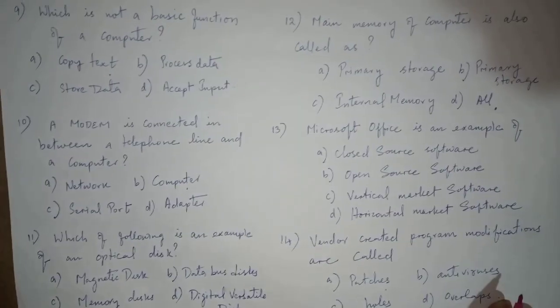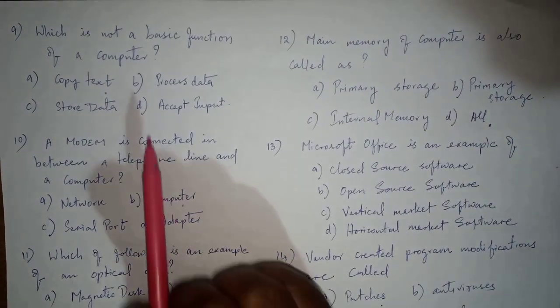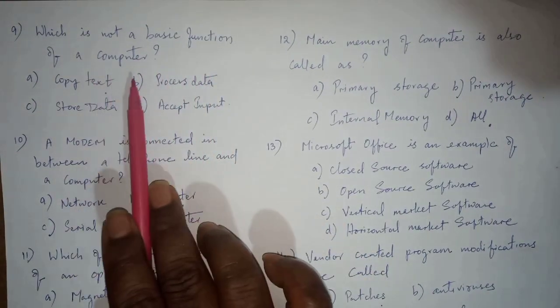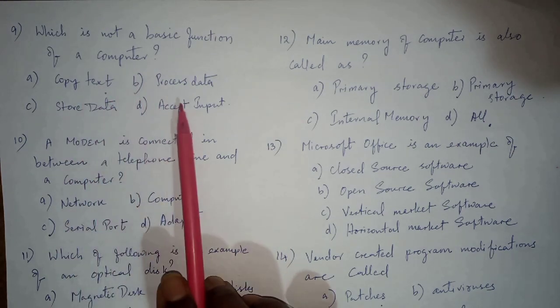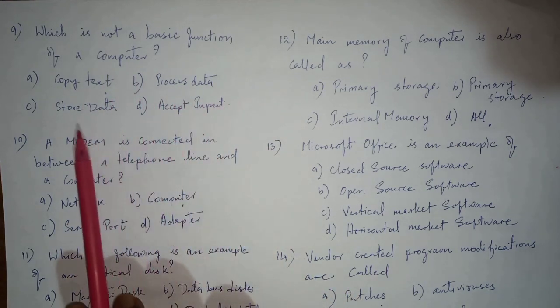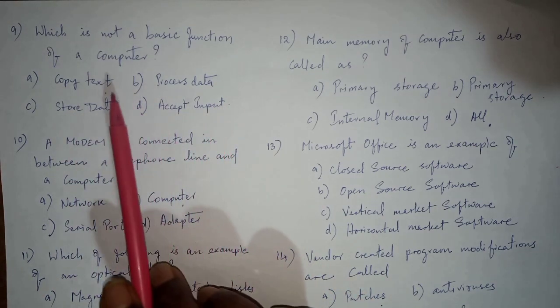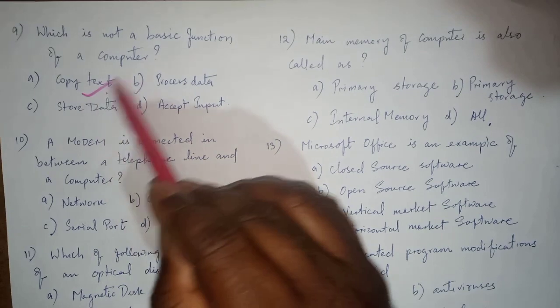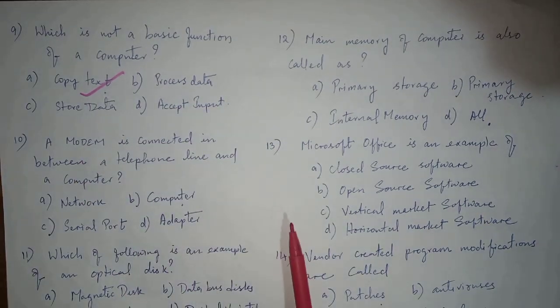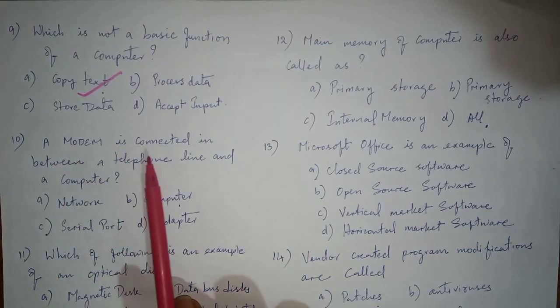Next question is: which is not a basic function of a computer? The options are copy text, process data, store data, accept input. And the answer is copy text, option A is the right answer.